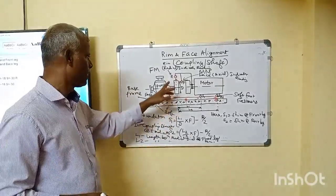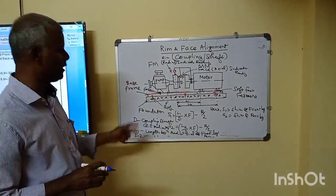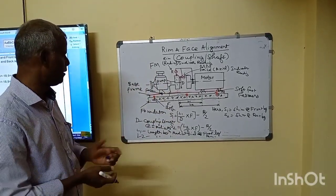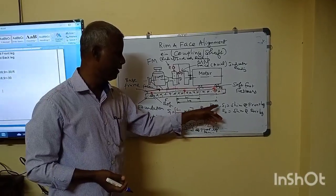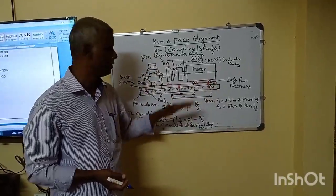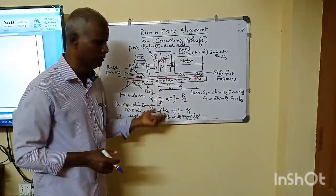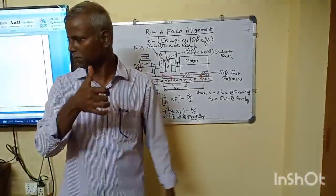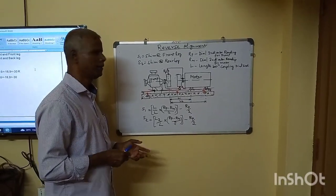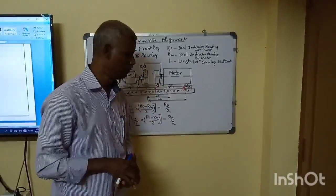The second length is the radial dial. If we take a further length, this is the first length L1. S2 is not the rear — this relates to the front line. We need to do the rim and face alignment.